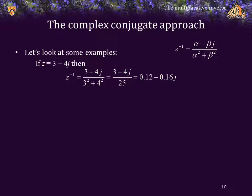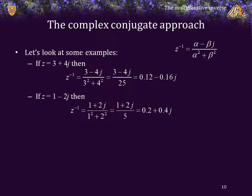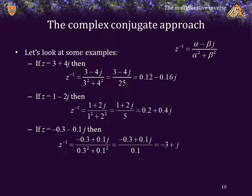If z is equal to 3 plus 4j, then its multiplicative inverse is the complex conjugate 3 minus 4j over the absolute value squared, 3 squared plus 4 squared, which is 25, so we get that the inverse of 3 plus 4j is 0.12 minus 0.16j. If z is equal to 1 minus 2j, we have the complex conjugate in the numerator and the absolute value squared in the denominator to get that the inverse is 0.2 plus 0.4j. Finally, if z is equal to negative 0.3 minus 0.1j, we calculate the complex conjugate for the numerator and the absolute value squared for the denominator, and expanding that out, we get that the multiplicative inverse is negative 3 plus j.